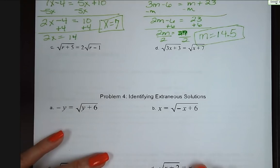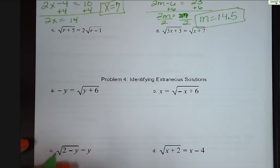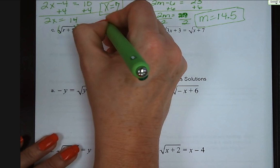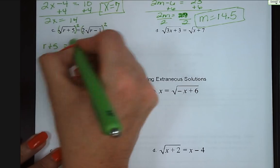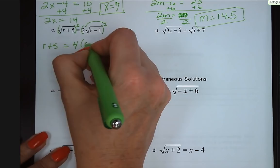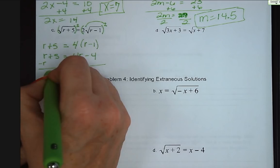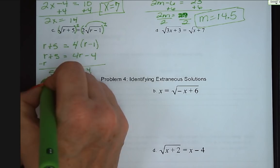Letter c: we square both sides, including squaring everything on both sides. We get r plus 5 equals 4 times the quantity r minus 1. Distribute the 4: 4r minus 4. Subtract r from both sides: 5 equals 3r. Add 4 to both sides: 9 equals 3r. Divide by 3: r equals 3.